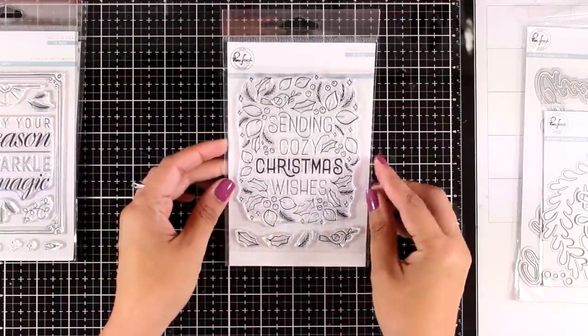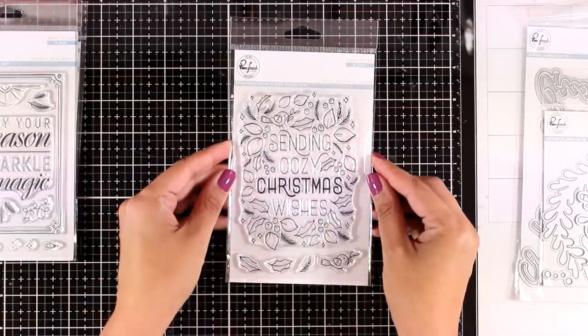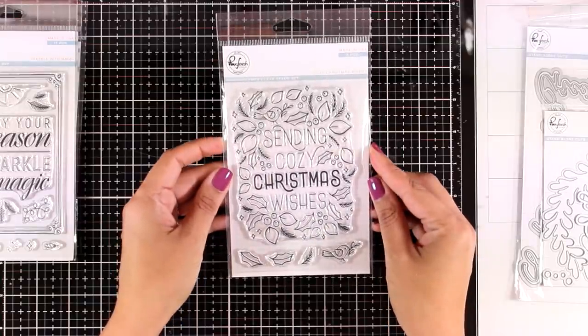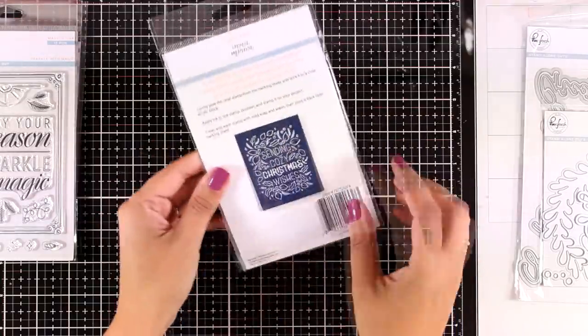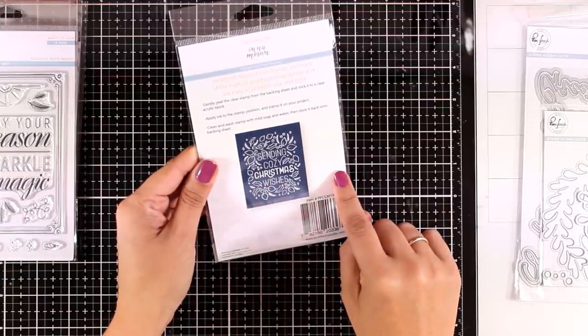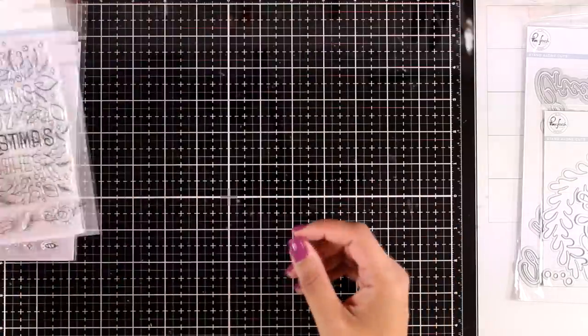Now here is another background. This one is connected and it is great if you want to mass produce some cards. All you have to do is just stamp that and maybe color it in or leave it as it is. This one is called Cosy Christmas Wishes.